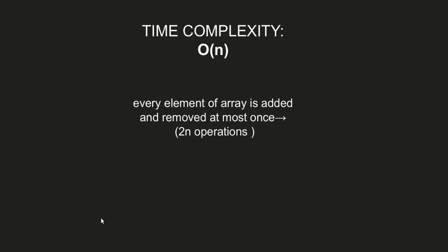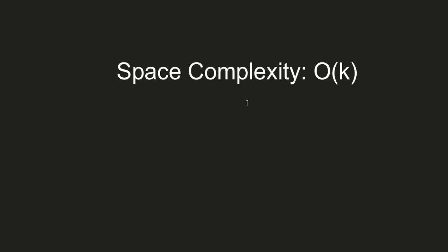The time complexity of method 3 using the deque is O(n), because every element of the array is added or removed at most once, giving a total of 2n operations. The space complexity is O(k) because we use a deque of size k.